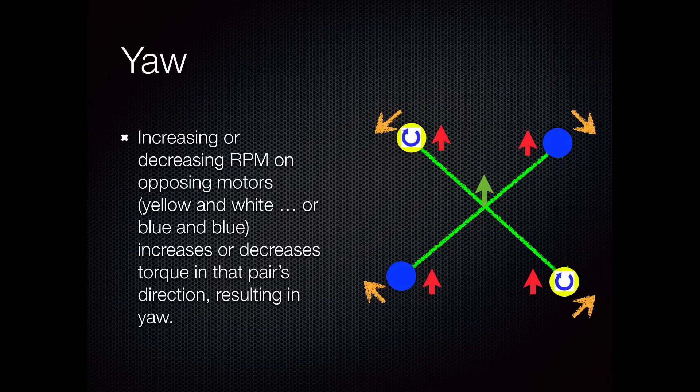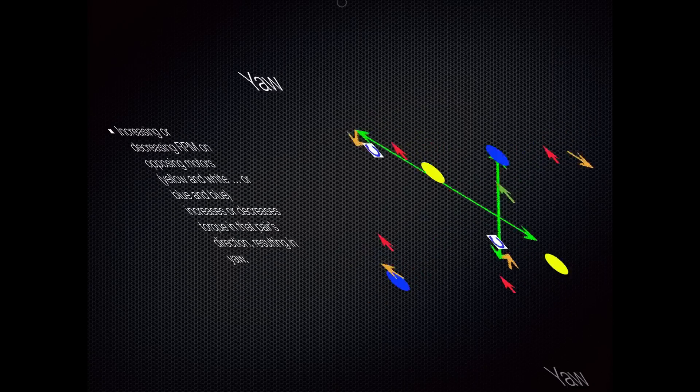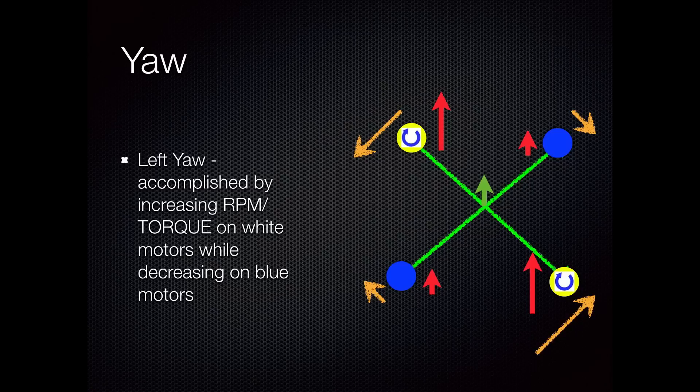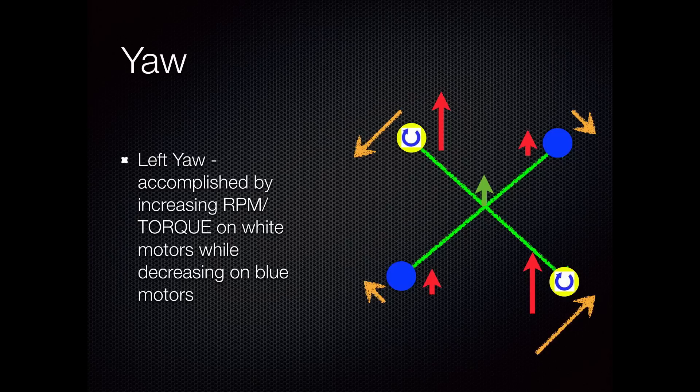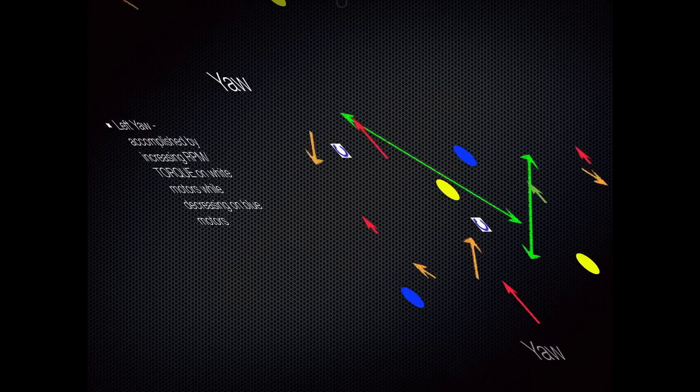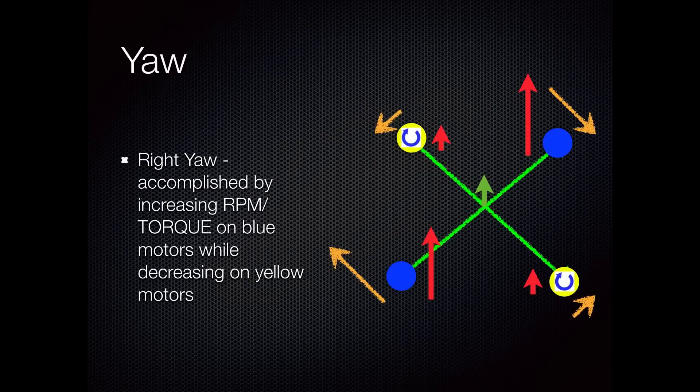In this case, for the illustration, we want to yaw to the left or point the nose to the left. What we need to do is increase the torque on the yellow or white motors at the ends of the stick, which would cause the yellow torque arrow to increase, and that way the quadcopter would yaw to the left. That's shown graphically here. We've increased the RPM on opposing pairs of motors, which also results in increasing the torque moment in that direction, so you would get a left-hand yaw. Just the reverse would get a yaw to the right.